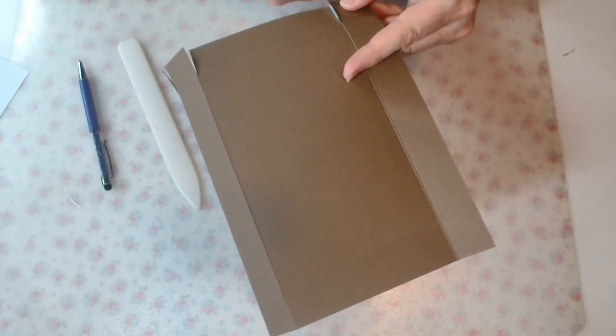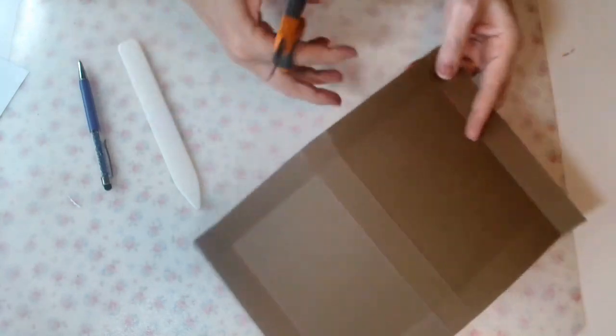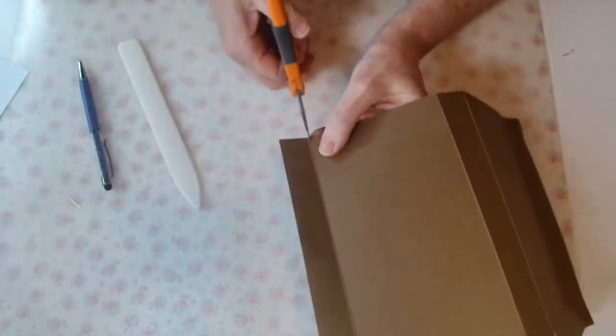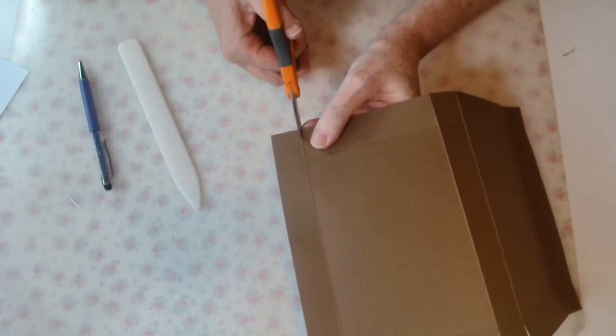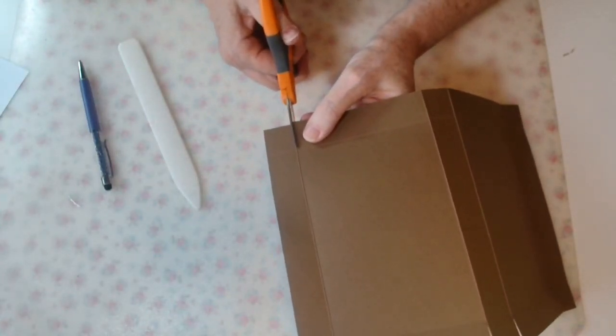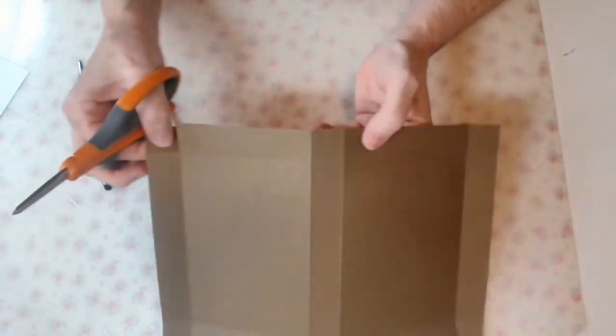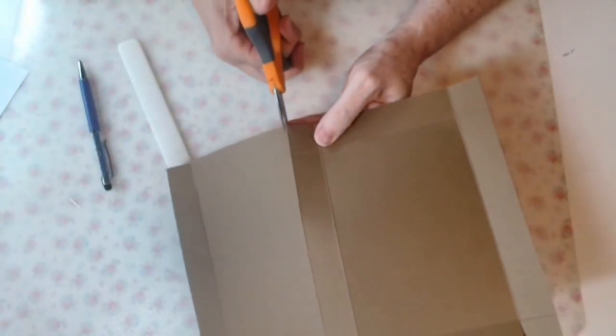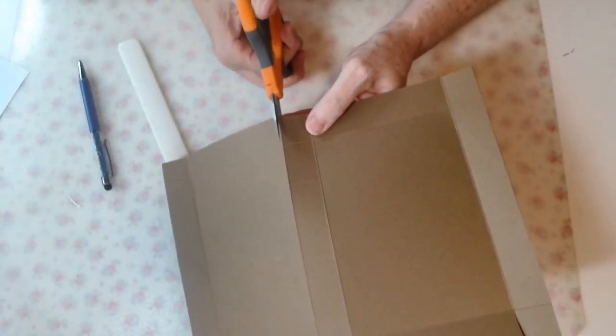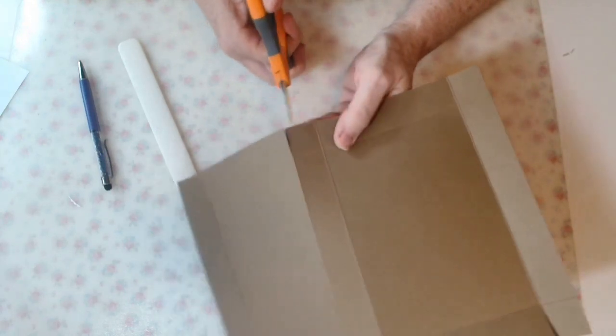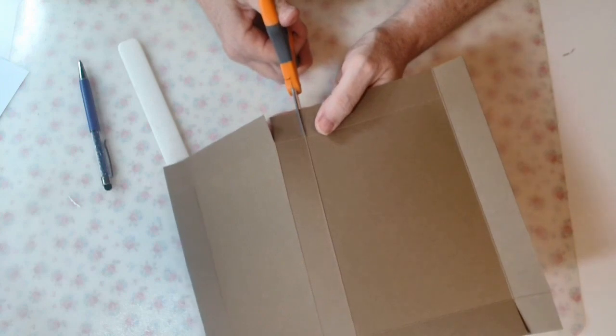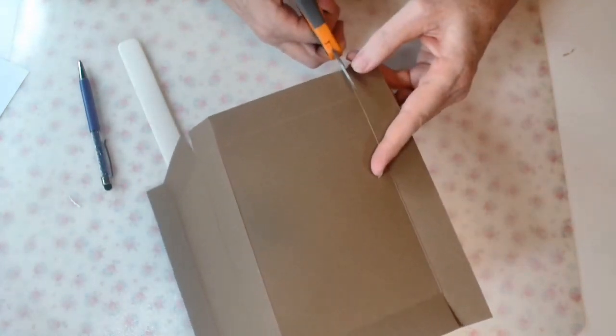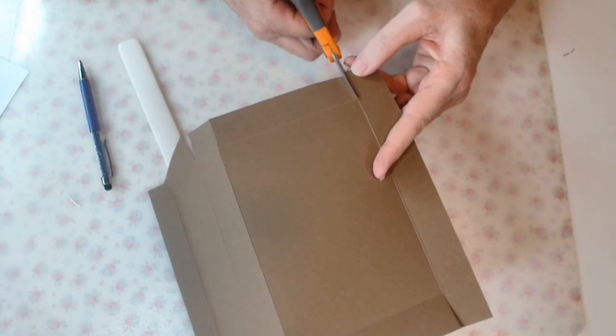I've got my trusty Fiskars. These are handy dandy, these little scissors. A nice little point on them, so I can get right to the score line. And two more to go. There we go. And there we go.